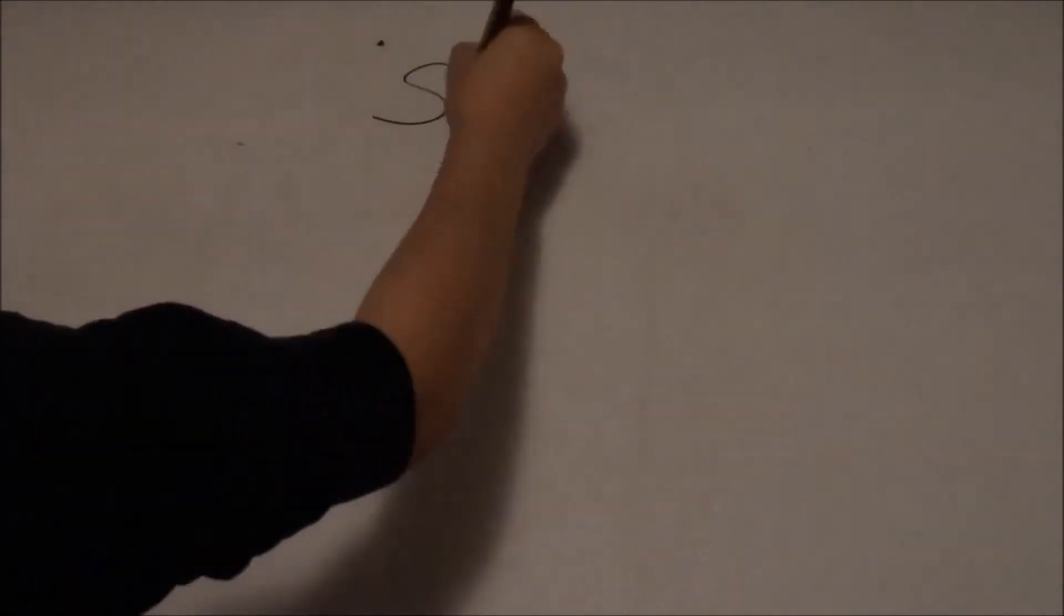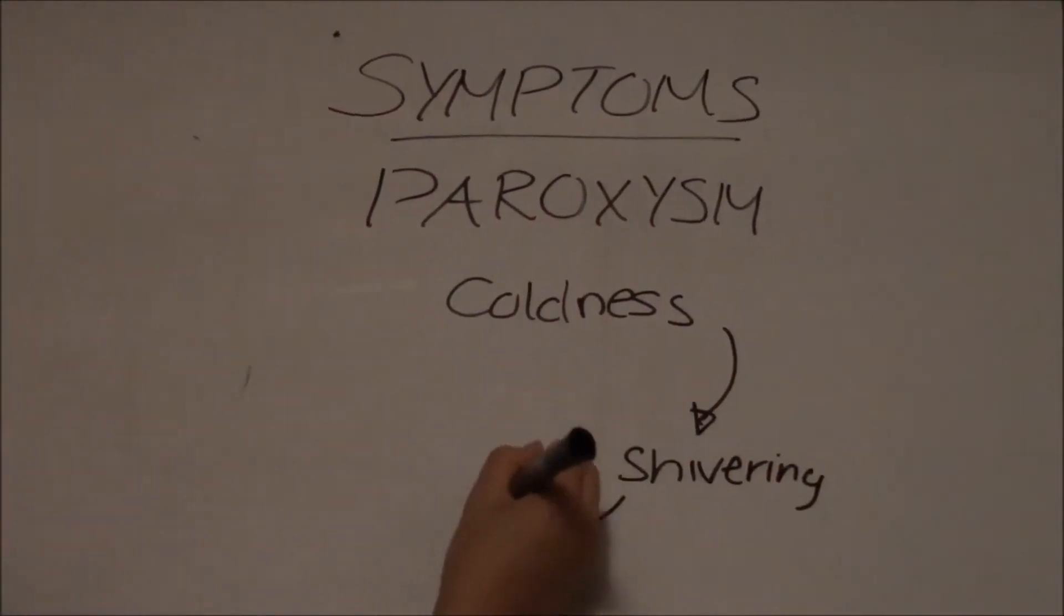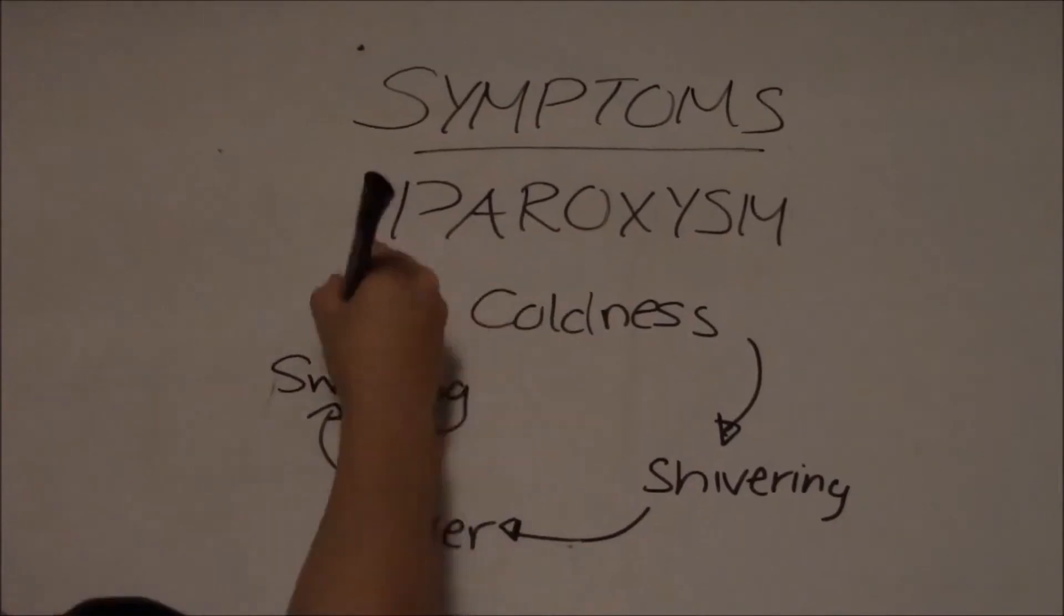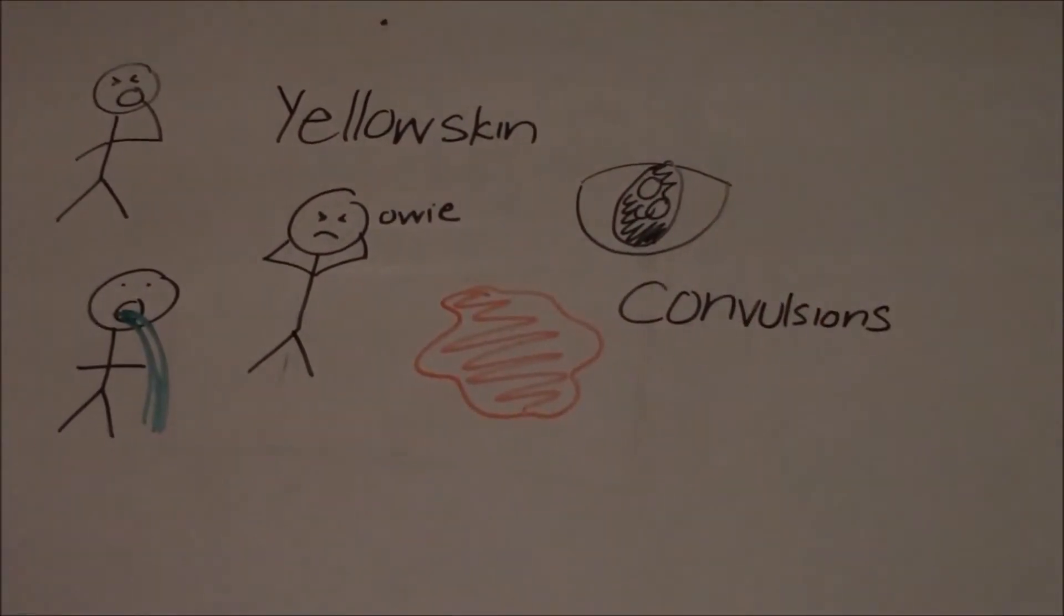The classic symptom of malaria is paroxysm, which is characterized as cyclical occurrence of coldness followed by shivering, fever, and sweating, and is recurrent every 36 to 48 hours. Other symptoms include fatigue, vomiting, headache, yellow skin, hemoglobin in urine, retinal damage, convulsions, seizure, coma, and death.